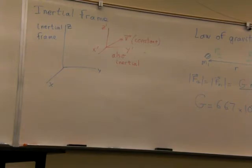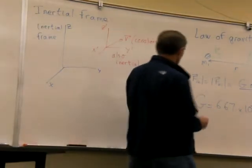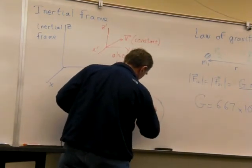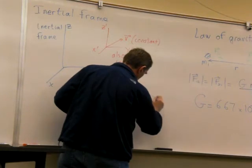From there, of course, you get that the weight of an object at the surface of the Earth is equal to m times g. You take the Earth, and so you have an object here.